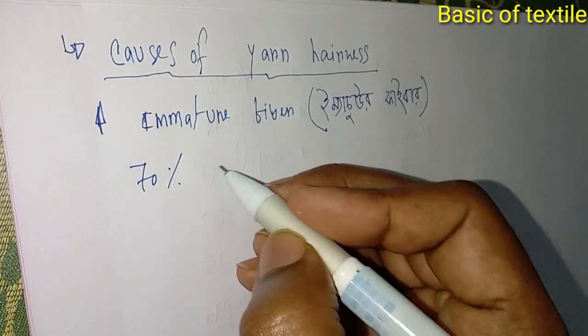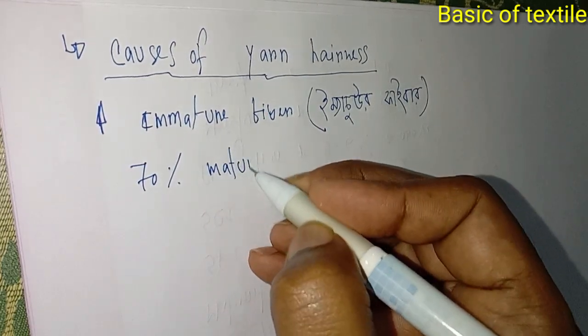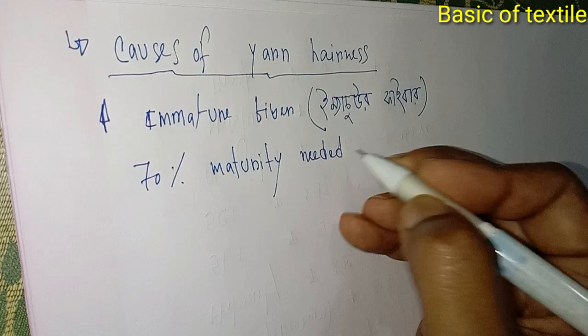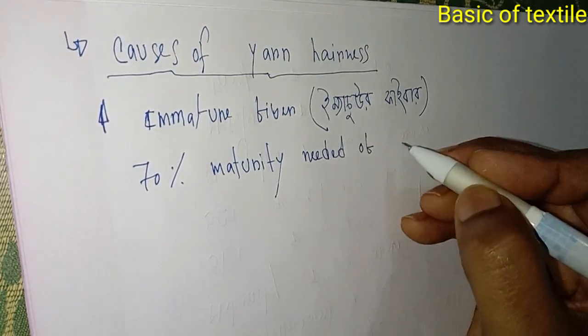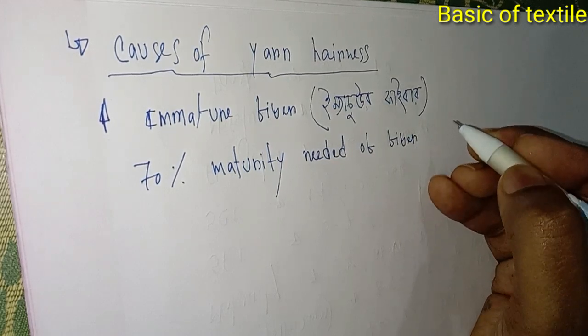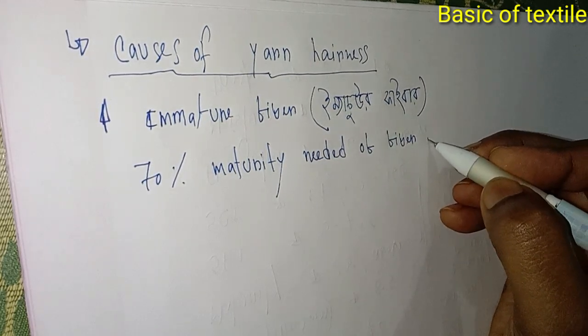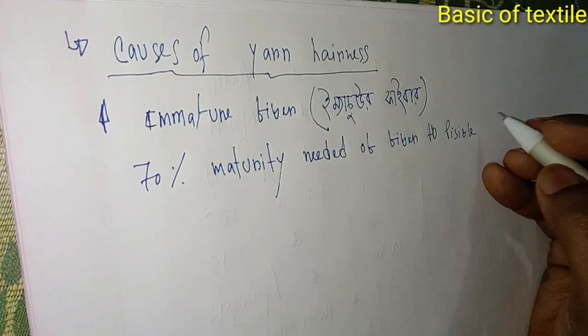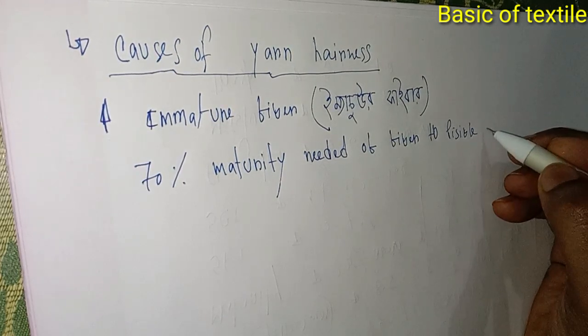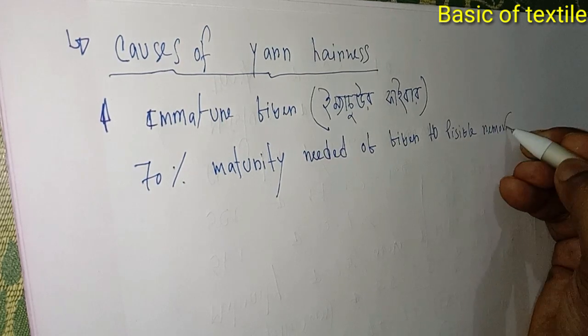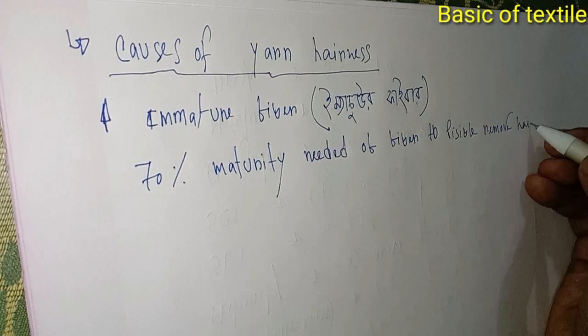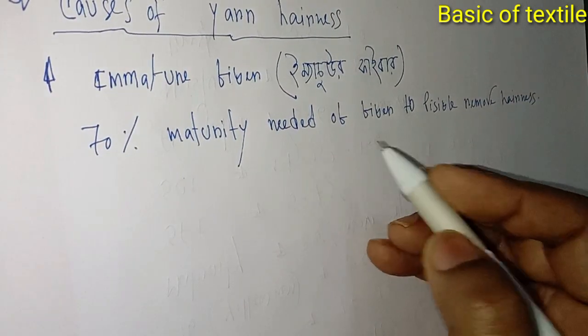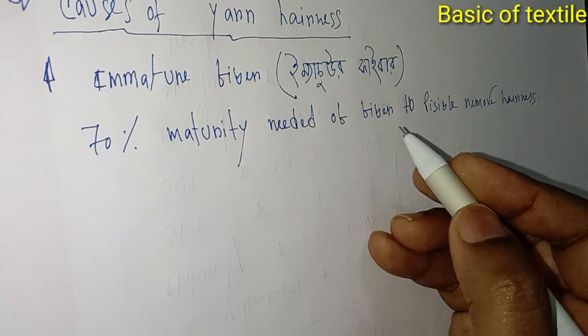Seventy percent maturity is needed of fiber to possible remove hairiness. If maturity is under 70%, hairiness in yarn will be common.